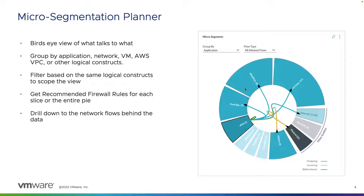The micro-segmentation planner allows you to group traffic visibility within your infrastructure, utilizing various constructs such as applications, network constructs like VLANs, VMs, native AWS VPCs, or any other logical constructs. We can filter down based on these constructs, and we can also adjust our flow type to see what flows are allowed, what flows are denied by firewall rules, and what flows are being dropped.